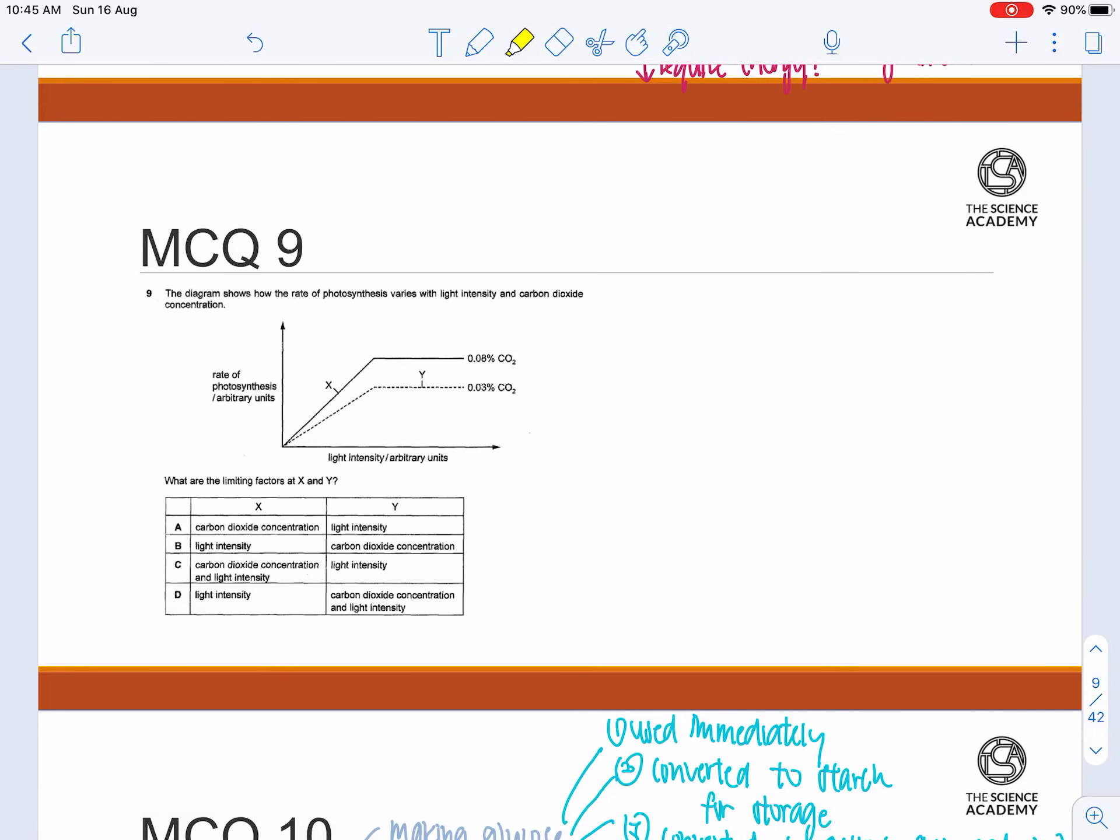Now let's move on to MCQ question 9. The diagram shows how the rate of photosynthesis varies with light intensity and carbon dioxide concentration. What are the limiting factors at X and Y?